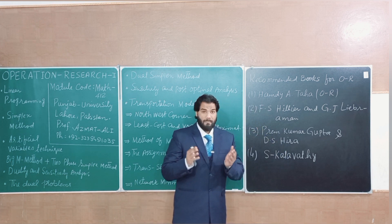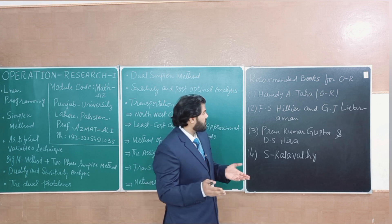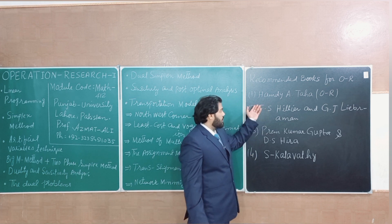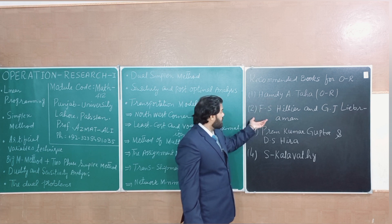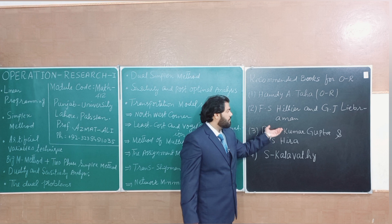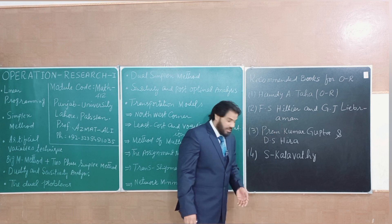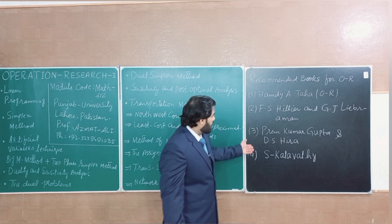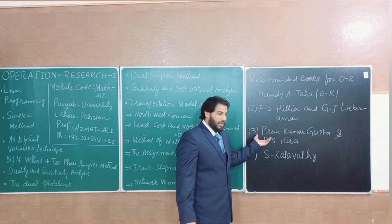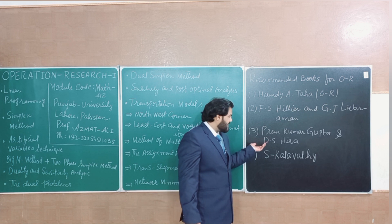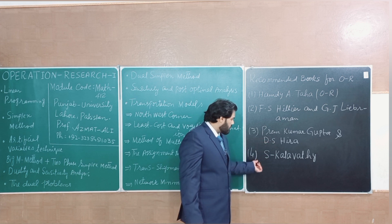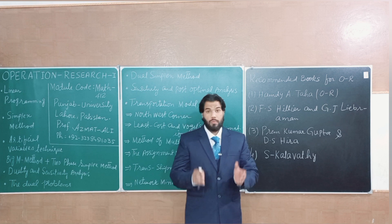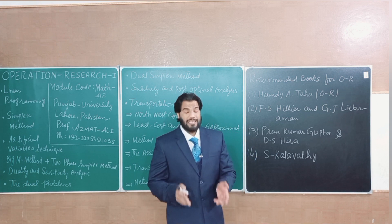Here are some useful books for Operation Research 1 and 2. First is Operation Research by Hamdi et al. Second is F.S. Hillier and G.J. Lieberman. The third and fourth books are my personal favorites: Operation Research by Prem Kumar Gupta and D.S. Hira — an Indian author — and the fourth is Operation Research by S. Kalawathi. I recommend these last two books as they are very easy to learn and understand.